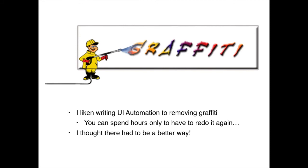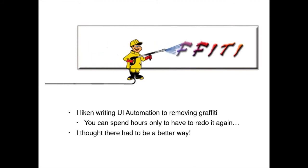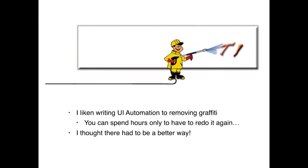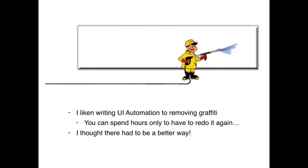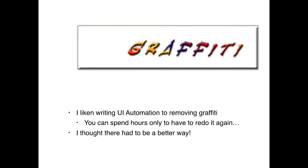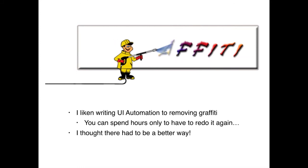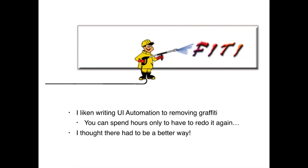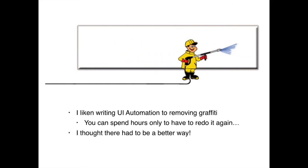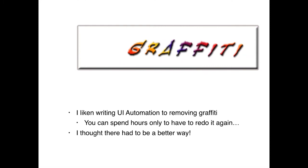Those of you who have done UI test automation can probably relate — you spend hours making the perfect automation framework, all tests are green, only to come in the next day and everything's red. I'm passionate about test automation and have dedicated my career to it, but there's only so much you can do before it starts testing your sanity. I liken it to the people who remove graffiti — you spend hours doing something only to have to redo it again.